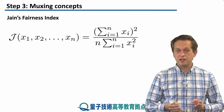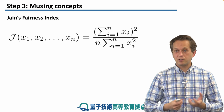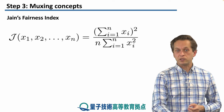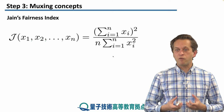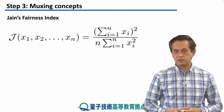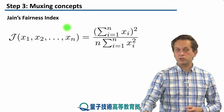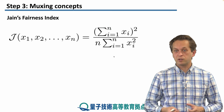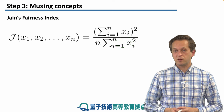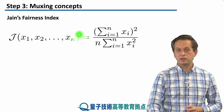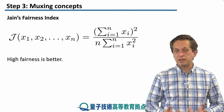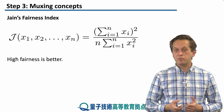Let's start with the fairness index — Jain's fairness index. After the network achieves some tasks, for example distributing bell pairs between connections x1, x2, up to xn, we would like to know how fair that distributed computation was, and that can be quantified by Jain's fairness index. At the top, we have the square of the sum of the work achieved by connection xi. At the bottom, we have the sum of the squares of these connections renormalized by the number of connections. High fairness is better — it means the network shared those resources in a more fair way.